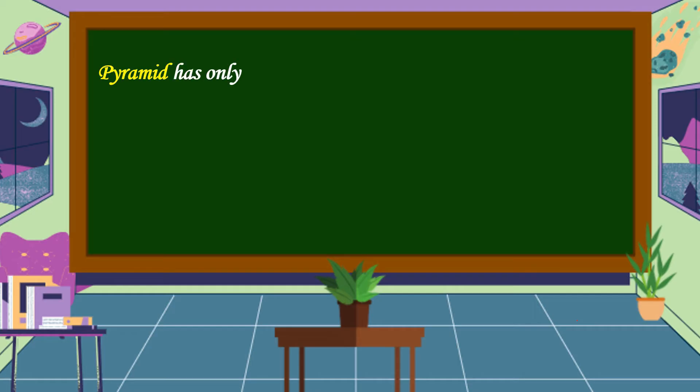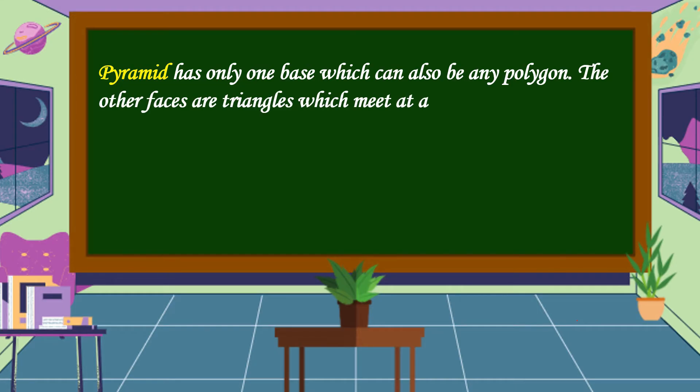What is a pyramid? A pyramid has only one base which can also be any polygon. The other faces are triangles which meet at a common vertex. A pyramid is also named after the shape of its base.